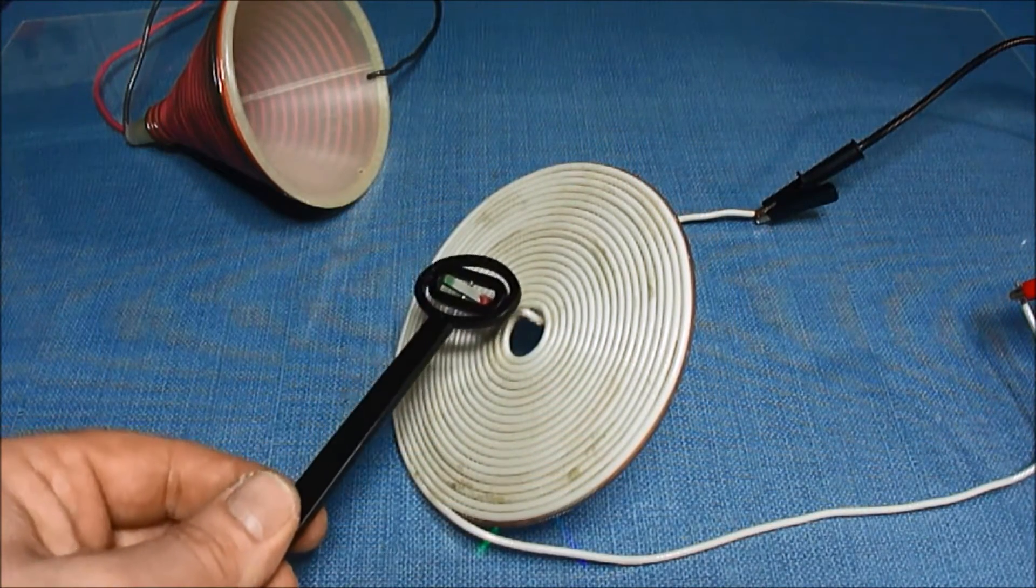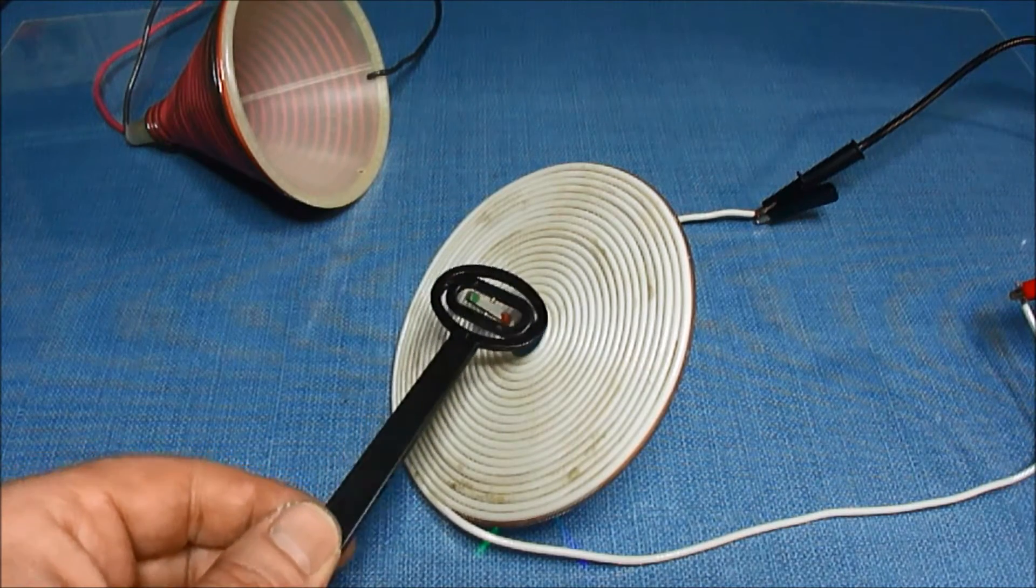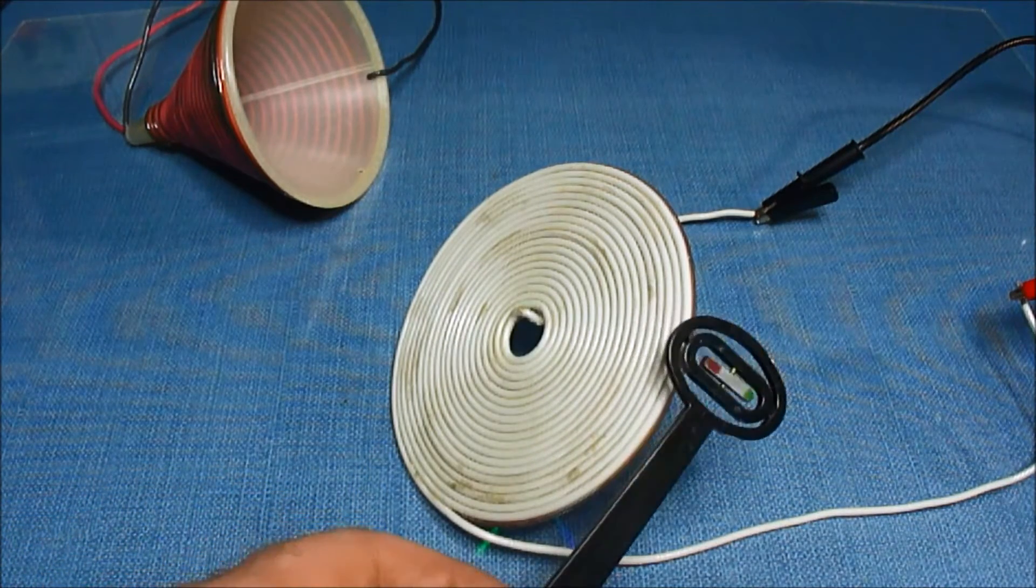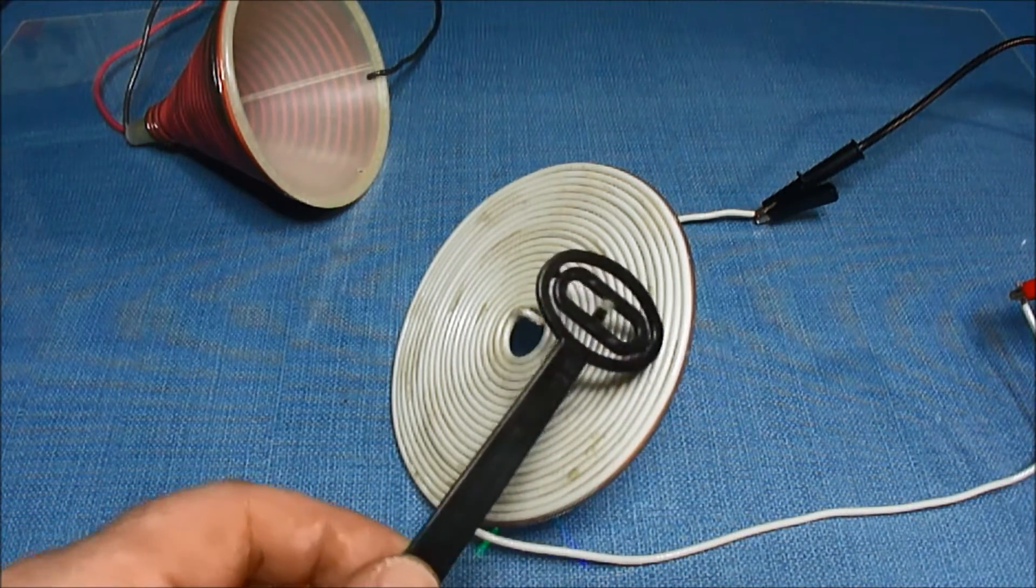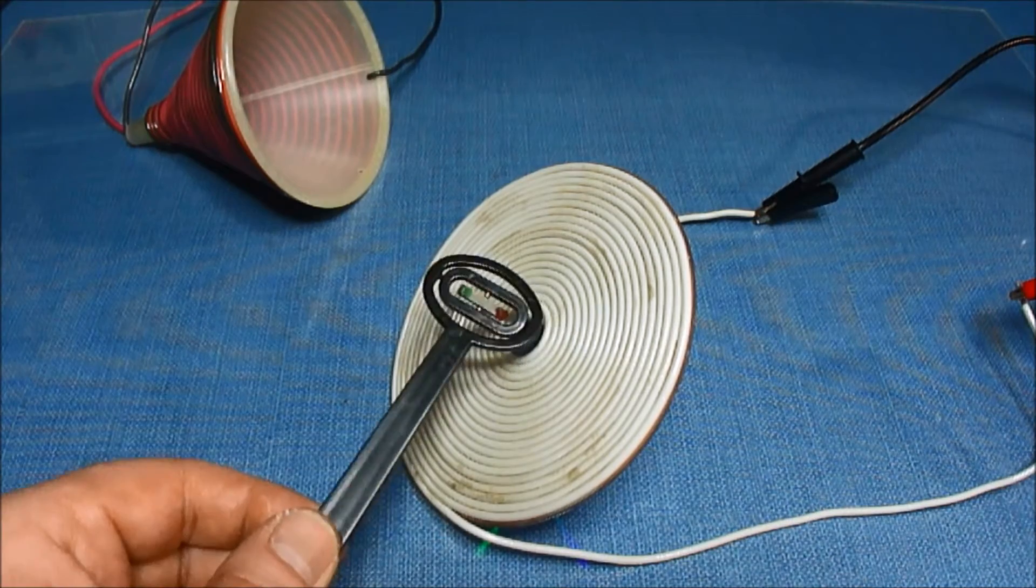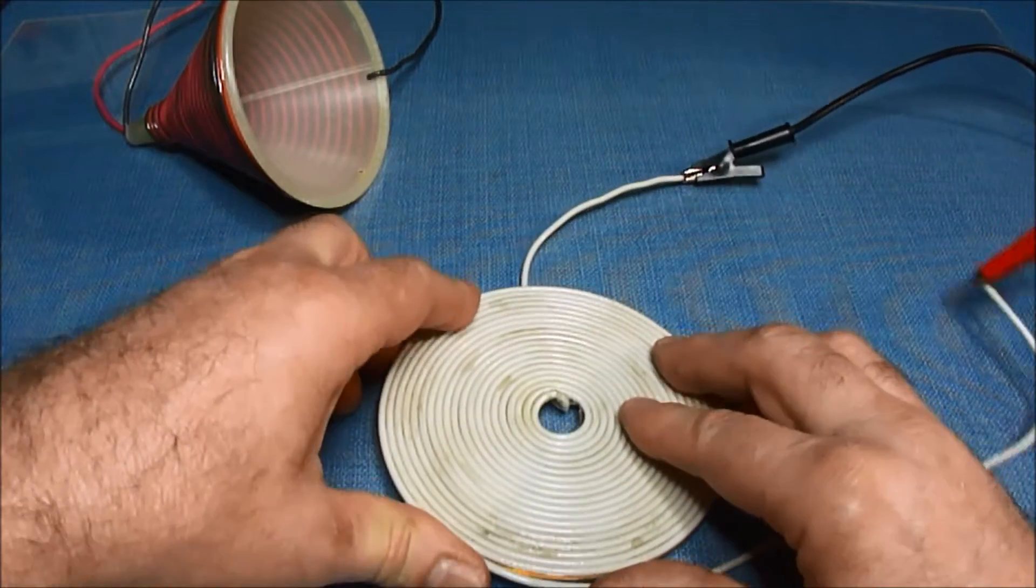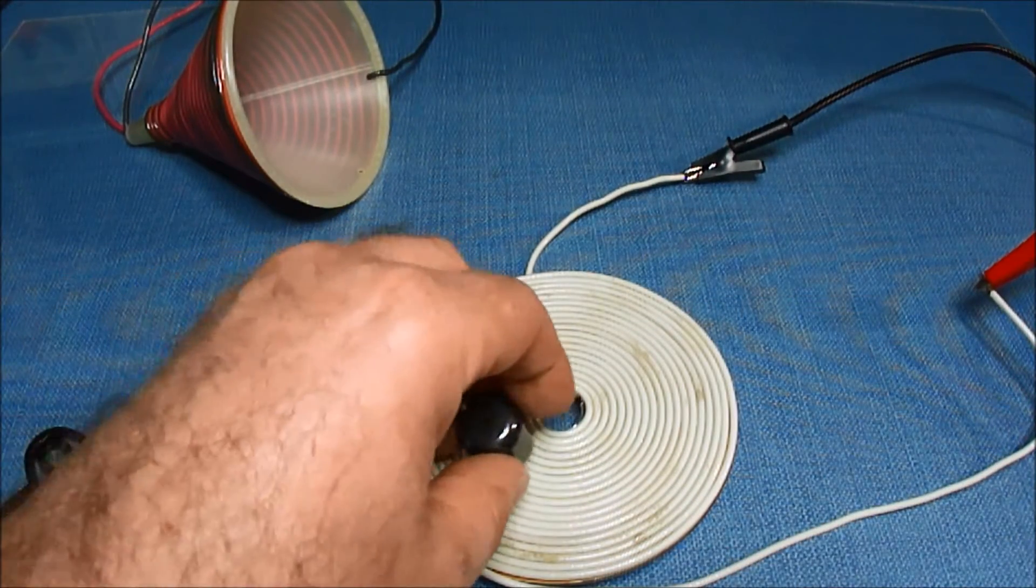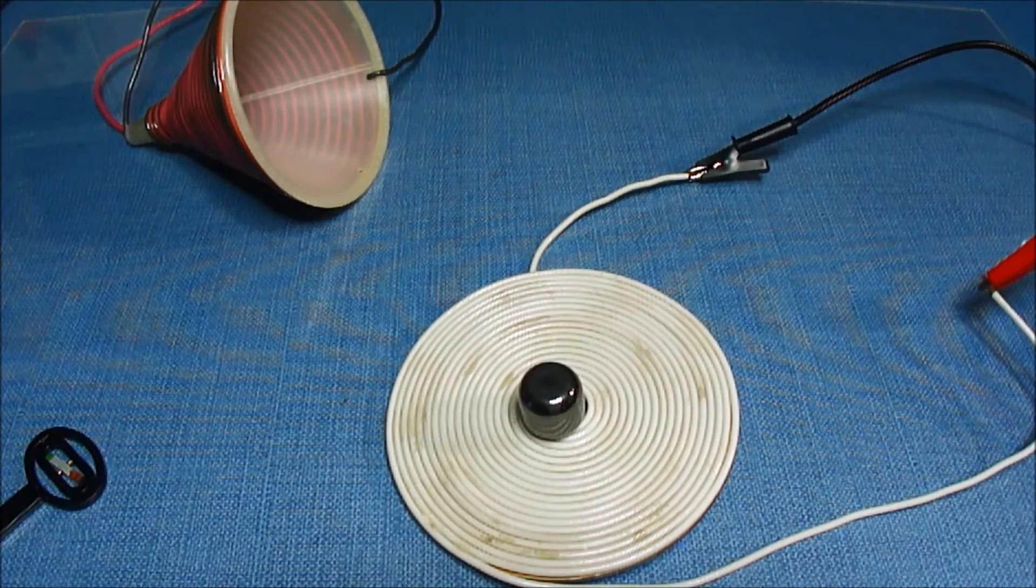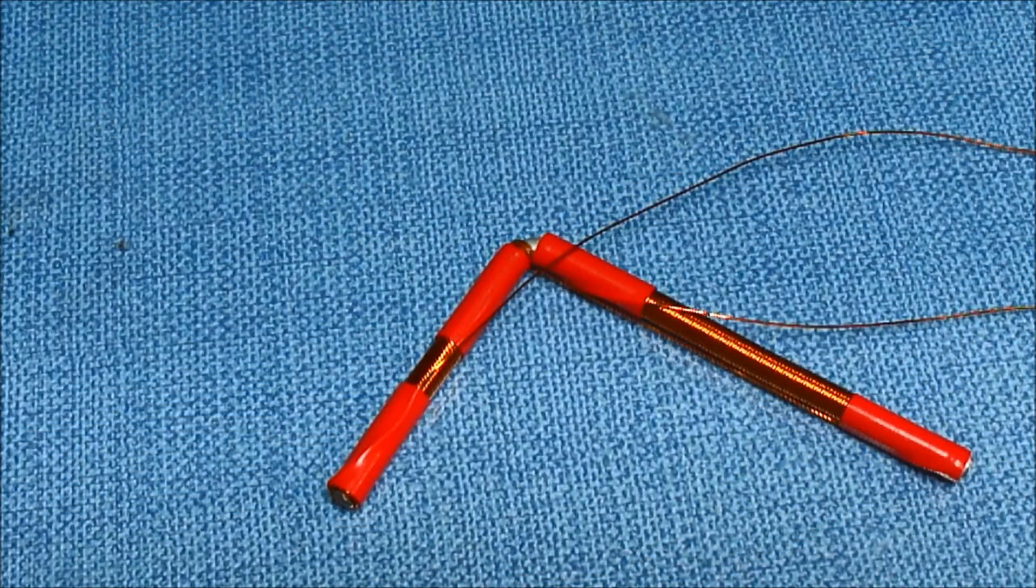This pancake coil, you have one pole on one side and one pole on the other. And your neutral line is in the thickness of the wire. Put a magnet on this one. You might recognize this magnet from Ed Leedskalnin's Coral Castle.